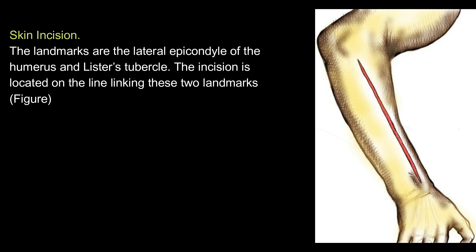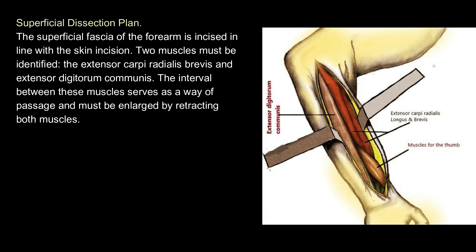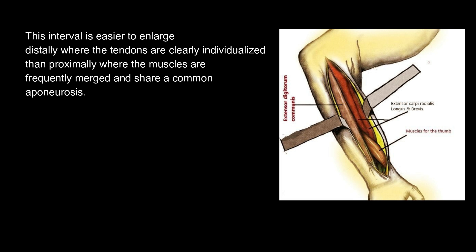Skin incision. The landmarks are the lateral epicondyle of the humerus and Lister's tubercle. The incision is located on the line linking these two landmarks. Superficial dissection plan: the superficial fascia of the forearm is incised in line with the skin incision. Two muscles must be identified: the extensor carpi radialis brevis and extensor digitorum communis. The interval between these muscles serves as a way of passage and must be enlarged by retracting both muscles. This interval is easier to enlarge distally where the tendons are clearly individualized than proximally where the muscles are frequently merged and share a common eponeurosis.